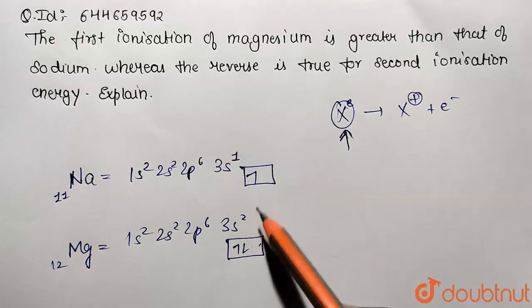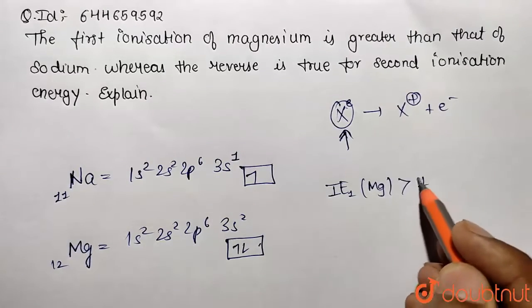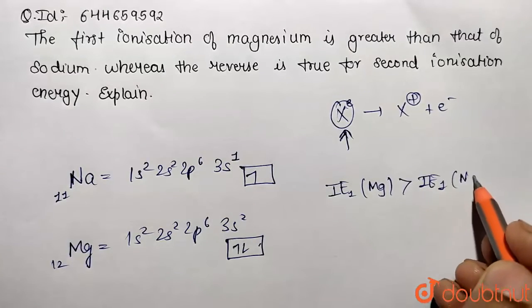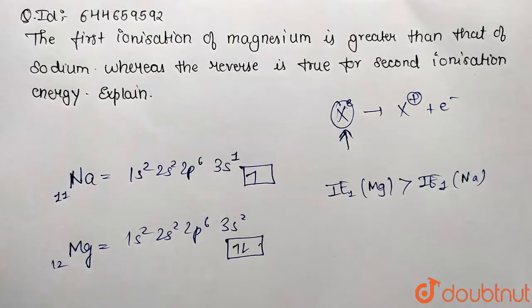So we can write ionization energy 1 of magnesium greater than ionization energy 1 of sodium. So this is true. Now whereas reverse is true for second ionization energy.